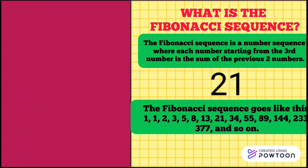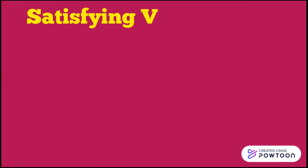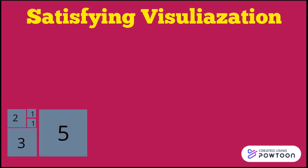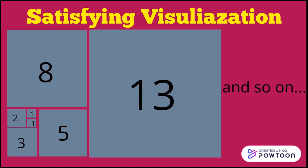There is a satisfying way to visualize the Fibonacci sequence. We start off by drawing two squares with side length 1. Then we draw a square whose side length is the sum of that of the previous two squares, and then another square whose side length is the sum of that of the previous two squares, and so on. This perfectly represents the Fibonacci sequence.